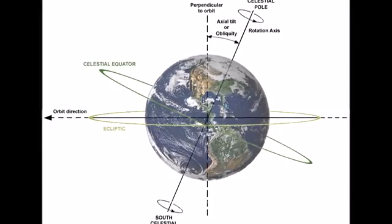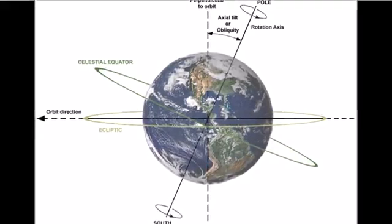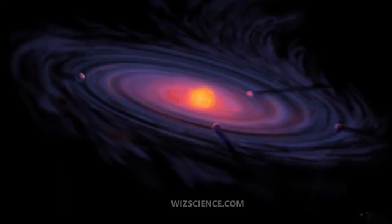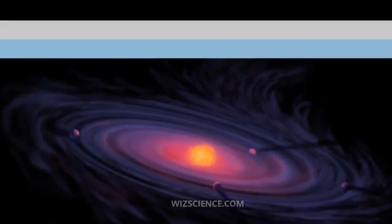Atomic clocks show that a modern day is longer by about 1.7 milliseconds than a century ago, slowly increasing the rate at which UTC is adjusted by leap seconds.